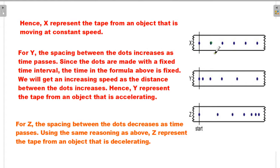Hence, X represents the tape from an object that is moving at constant speed. Every 0.1 seconds, the object moves 0.2 meters, so the average speed is 0.2 meters per second.